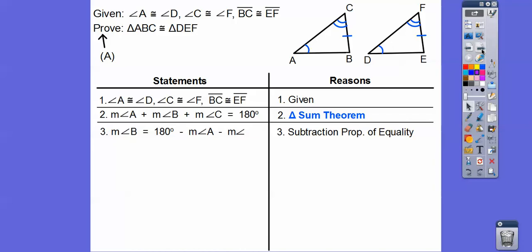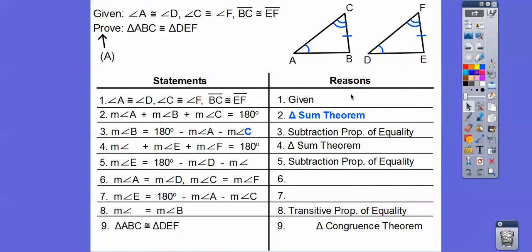Now we're going to use the subtraction property. We subtract angle A and angle C from 180. For the other triangle, angle D plus E plus F equals 180 by the same Triangle Sum Theorem. Then we subtract again, so angle E equals 180 minus D minus F.